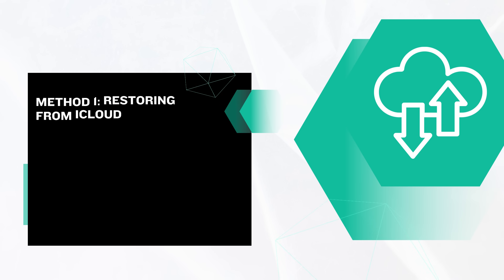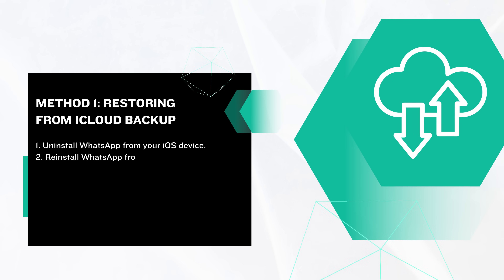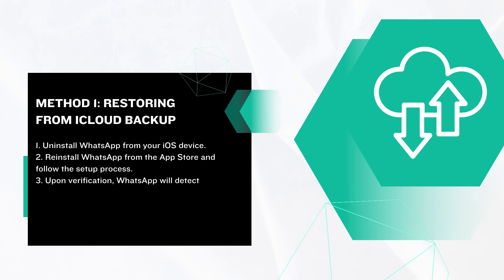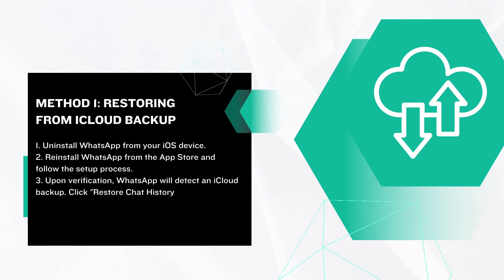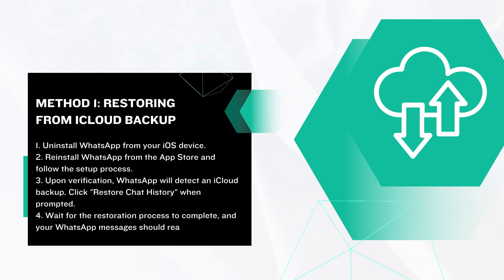Method 1: Restoring from iCloud backup. First, uninstall WhatsApp from your iOS device. Then reinstall WhatsApp from the App Store and follow the setup process. Upon verification, WhatsApp will detect an iCloud backup. Click Restore Chat History when prompted. Wait for the restoration process to complete and your WhatsApp messages should reappear.